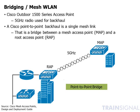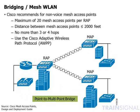When using access points as a bridge connection, the 5 GHz band is typically used. Cisco recommends no more than 20 mesh access points per root access point, and no more than 3 or 4 hops when deploying a non-voice mesh network.